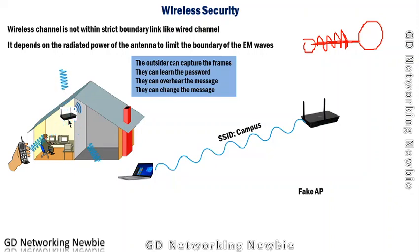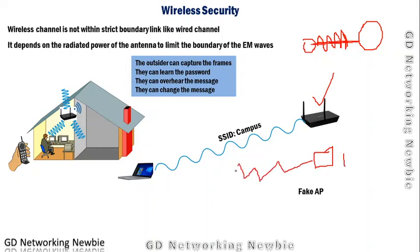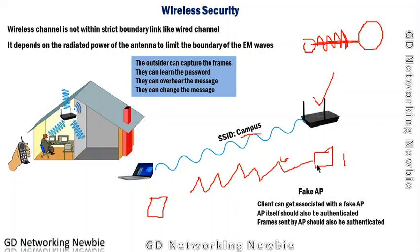Another problem is the fake access point. We have a genuine access point, but there may also be a fake access point that can radiate and broadcast an SSID similar to ours. We can accidentally get connected with this fake access point, which can collect all of our credentials and be used for hacking purposes. Accidentally falling into this trap and connecting to a fake access point is also very dangerous.